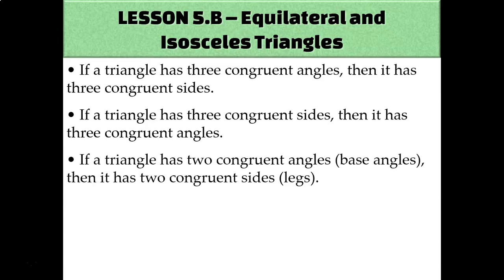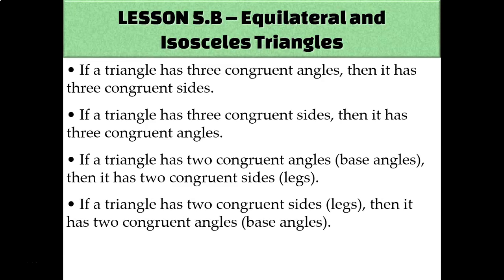We can say something similar for two congruent angles and two congruent sides; we just have to be a little specific about what we call them. If a triangle has two congruent angles, we call them base angles, and therefore it has two congruent sides, which we call legs. And vice versa, if a triangle has two congruent sides (legs), then it has two congruent angles, called base angles.